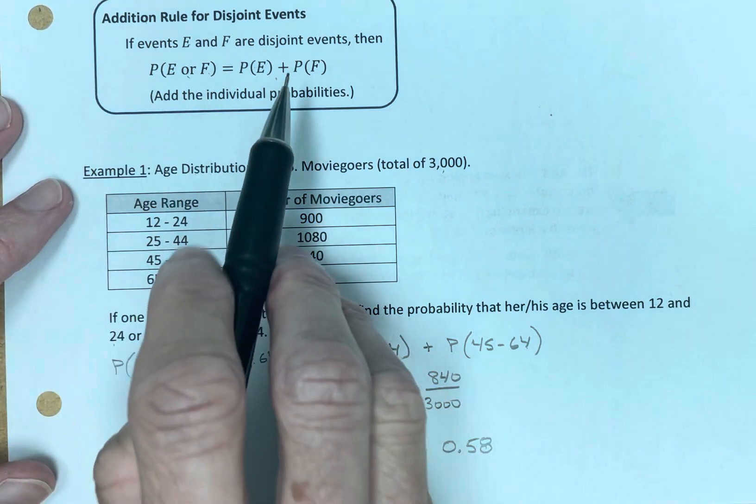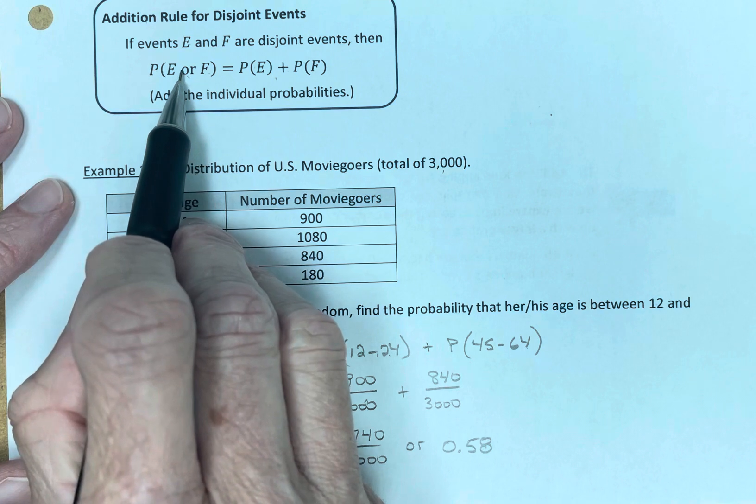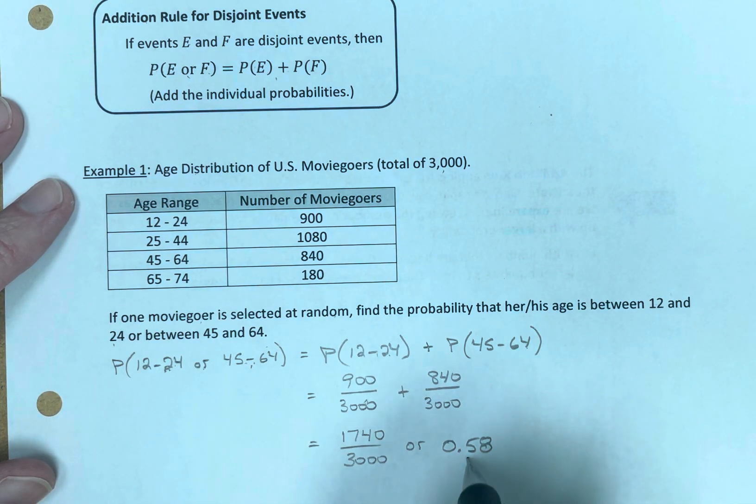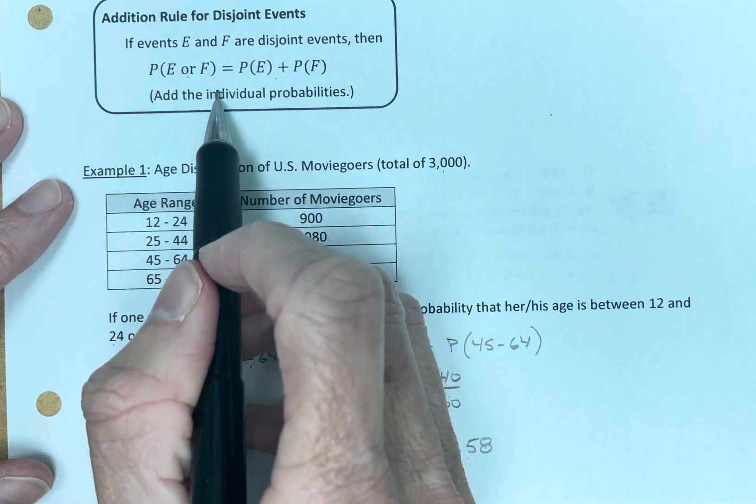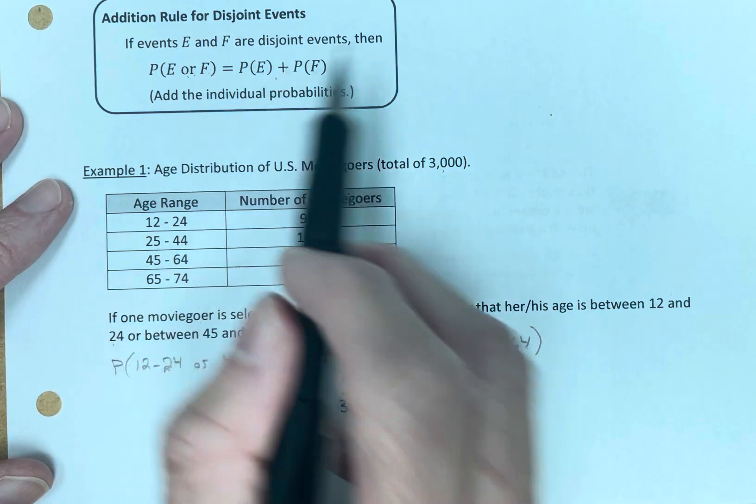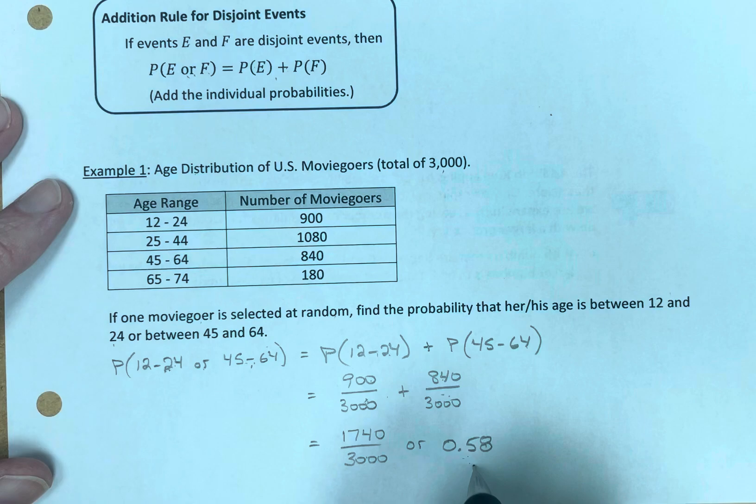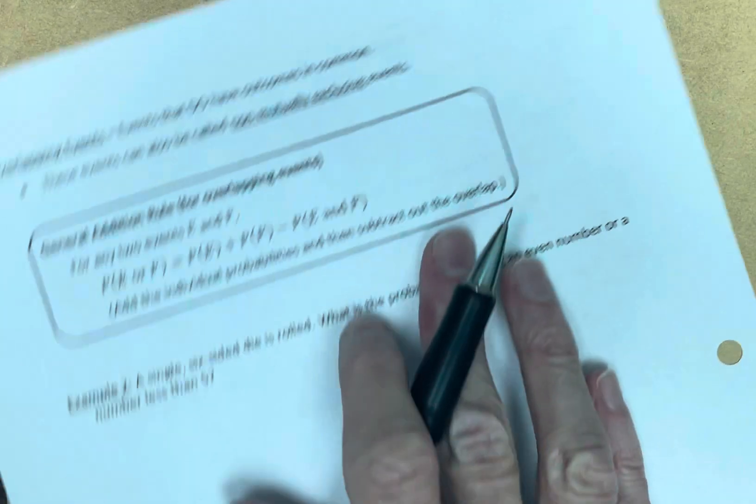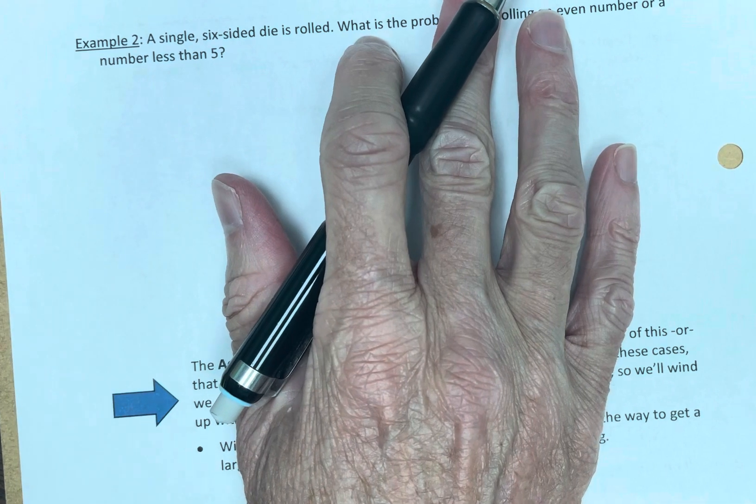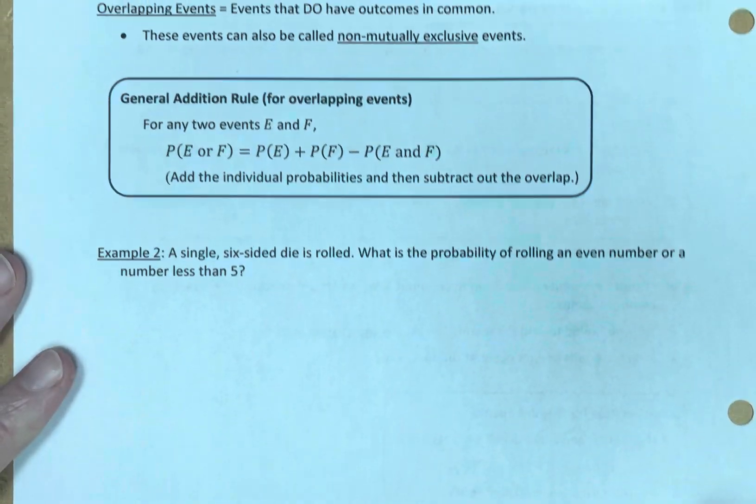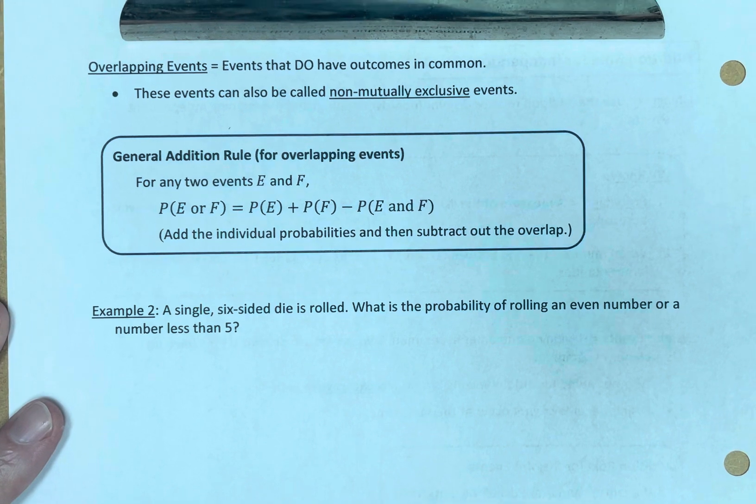So the addition rule comes into play when you deal with an or probability. Notice, the sum is larger. We added 900 and 840. When we have a sum, we get a larger sum. So an or probability results in a larger end result. That's an or. We're going to compare it, we're going to contrast that in a future lesson.